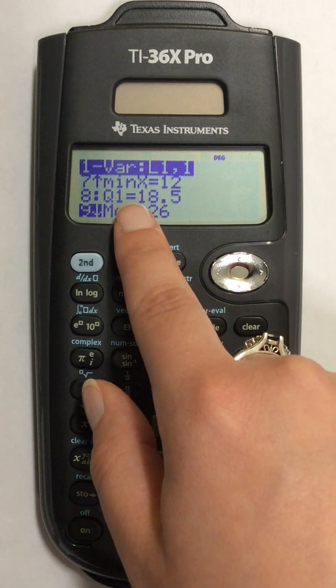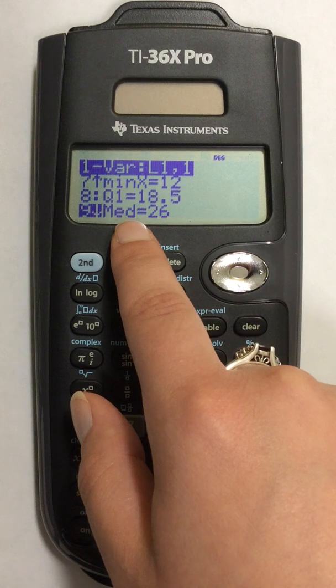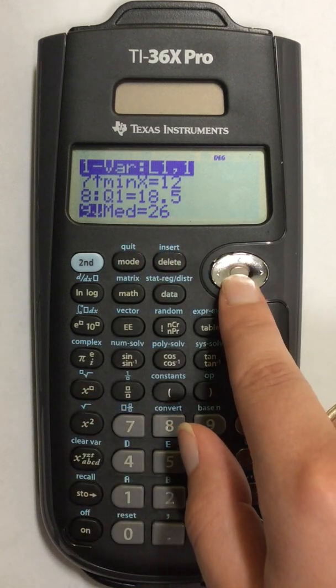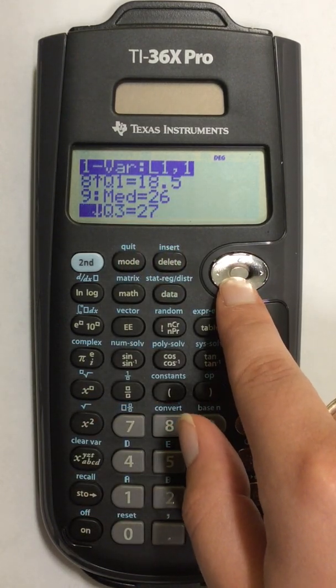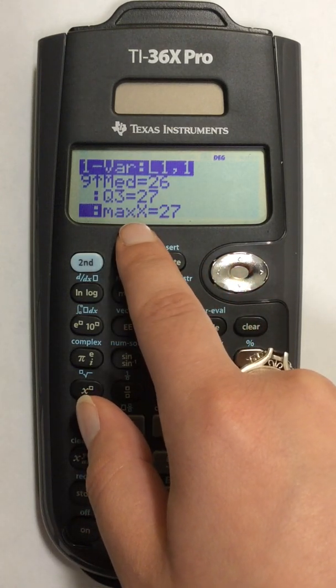So you're going to have the minimum, your Q1, your median, and then your two other numbers show up below: your Q3 and your maximum.